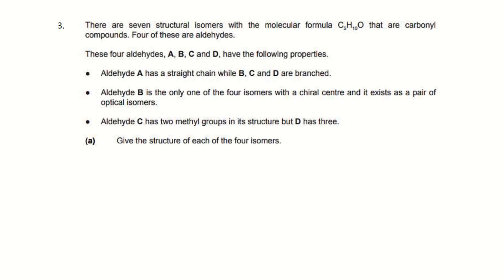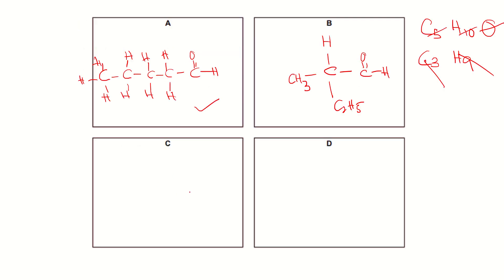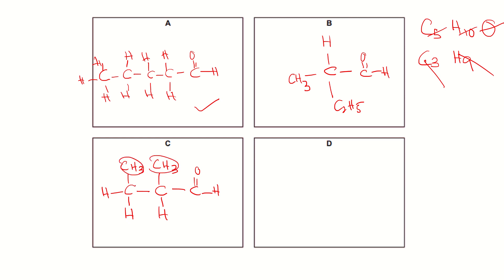Aldehyde C has two methyl groups in its structure. Drawing the aldehyde group first, then fitting in two methyl groups (CH3) and the remaining carbons and hydrogens: counting gives 5 carbons, 10 hydrogens, and 1 oxygen — matched. Aldehyde C is done.